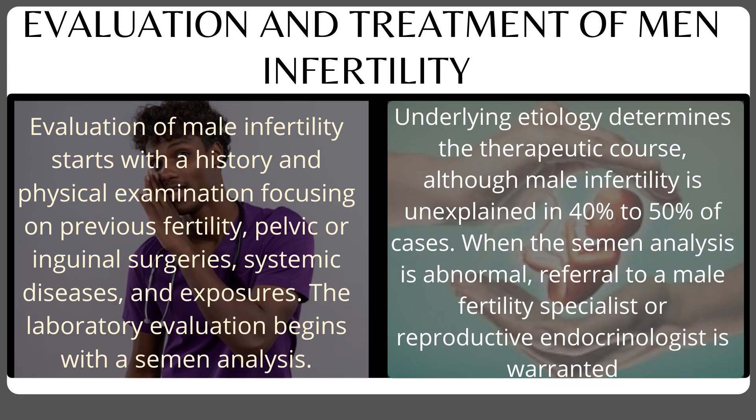Evaluation of male infertility starts with a history and physical examination focusing on previous infertility, pelvic or inguinal surgeries, systemic diseases, and exposures. Laboratory evaluation begins with semen analysis, and an underlying etiology usually determines the therapeutic course. About 40 to 50 percent of male infertility cases are unexplained; when semen analysis is abnormal, referral to a male fertility specialist or reproductive endocrinologist is warranted.